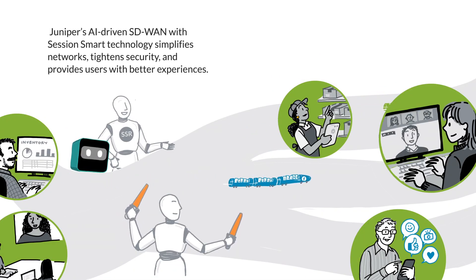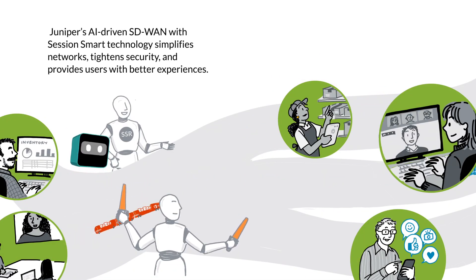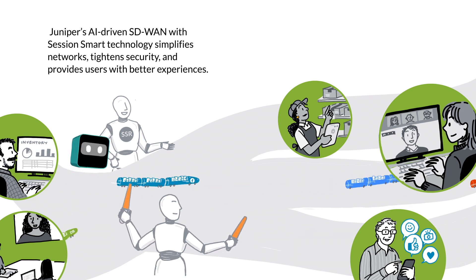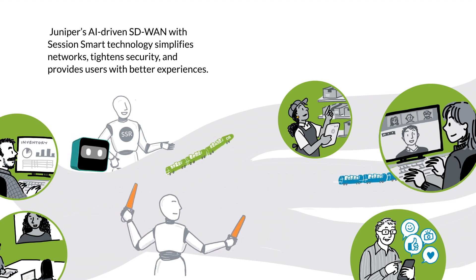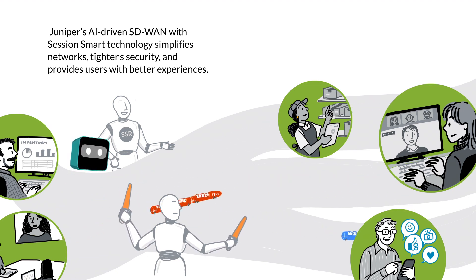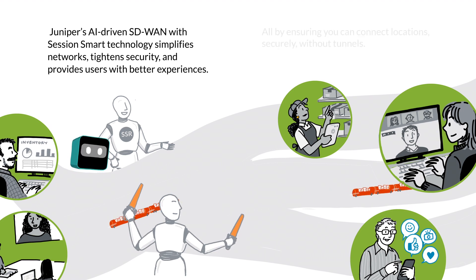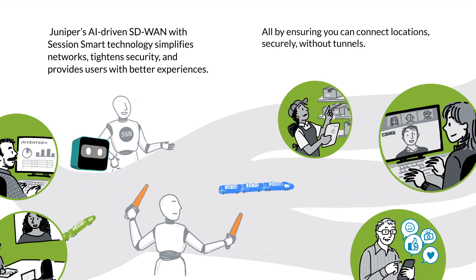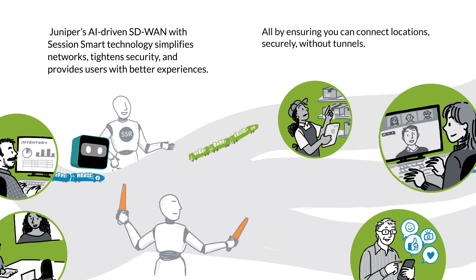Juniper's AI-Driven SD-WAN with Session Smart technology simplifies networks, tightens security, and provides users with better experiences — all by ensuring you can connect locations securely without tunnels.